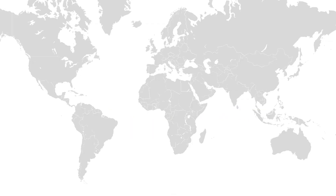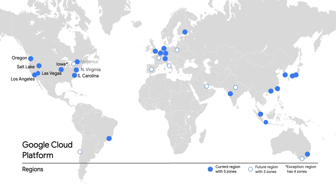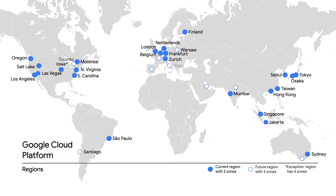Before looking at the SAP-specific architecture patterns, I want to highlight some of the out-of-the-box concepts that Google Cloud can offer to improve the uptime of any virtual machine running on Google Compute Engine. Google Cloud is highly available by design, with a redundant infrastructure of data centers around the world that contain zones designed to be independent from each other. The blue dots on the map indicate regions that are available today, and the white ones indicate future regions.